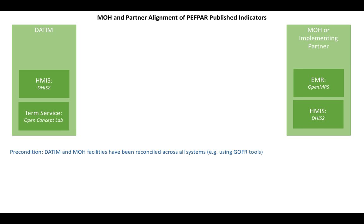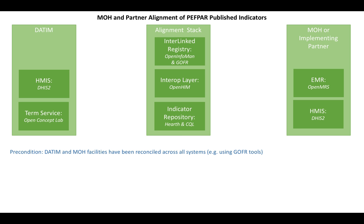In this scenario, we're going to assume that the health facility lists have been reconciled across all systems using, for example, the Gopher tools as described above. The key component we're going to be adding now is an indicator alignment stack, which will consist of the interlinked registry — which has the aligned health facility data — the interoperability layer, and the indicator repository, which will hold our indicator values and the mappings between them. This alignment stack can either sit within the Datim or the MOH jurisdiction, but requires these components.